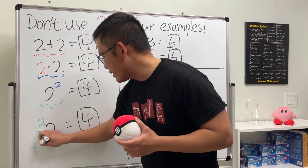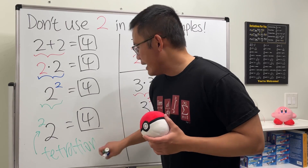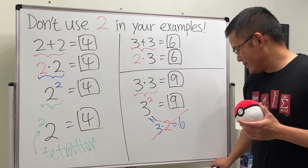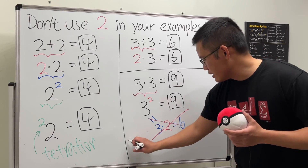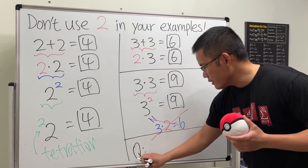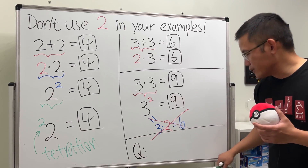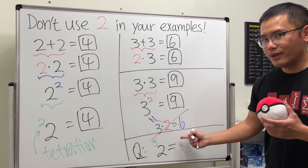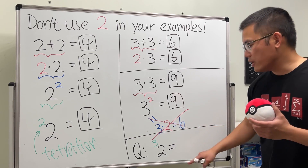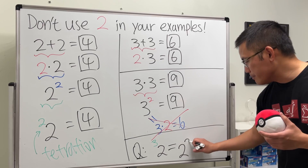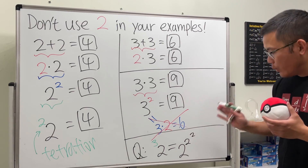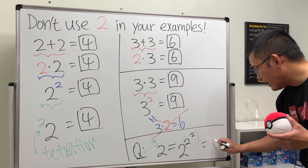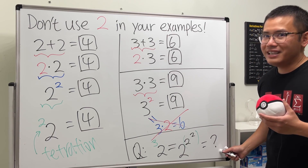This operation is called tetration, which means repeated exponentiation. Here's a quick question for you: what will be the answer when you have 3 here and 2 here? This means repeat the exponentiation with the number 2 — so you do 2 raised to the second power, and then raise that to the second power again. You have to do the inner exponent first, then apply the outer exponent. Comment your answer down below and let me know what you get!